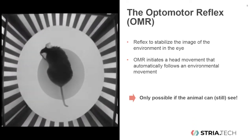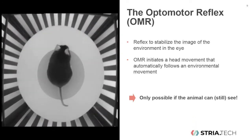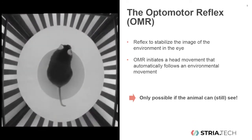When there is a global movement of the environment, the optomotor reflex causes an involuntary head movement — the animal follows the moving environment with its gaze. The purpose of the optomotor reflex is to visually stabilize the environment. The optomotor reflex is only triggered when the mouse can actually see that stripe pattern.